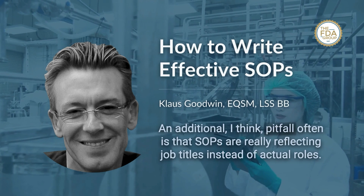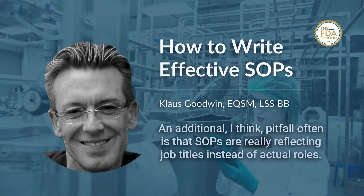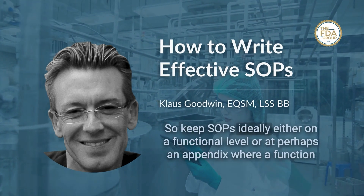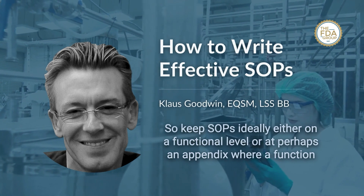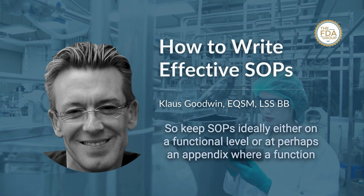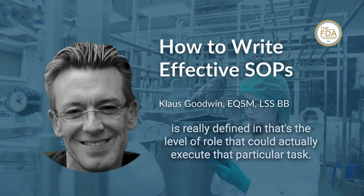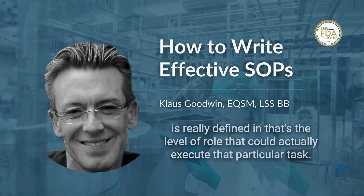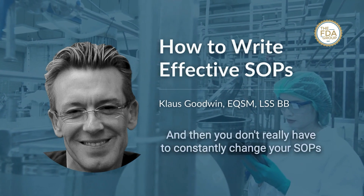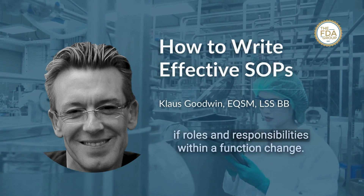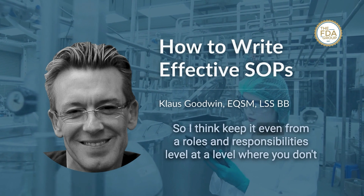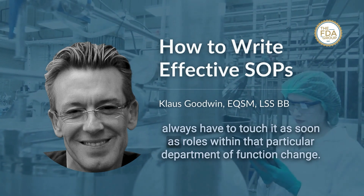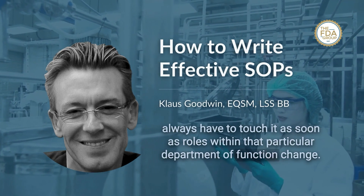Another common pitfall is that SOPs reflect job titles instead of actual roles. Keep SOPs ideally at a functional level, or use an appendix where a function is defined at the level of role that could execute a particular task. That way, you don't have to constantly change your SOPs if roles and responsibilities within a function change.